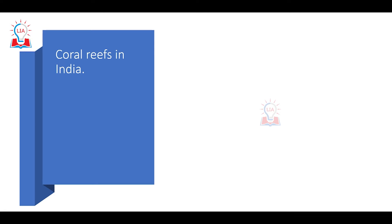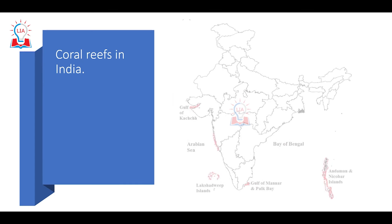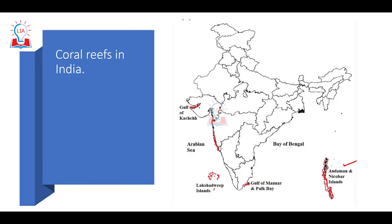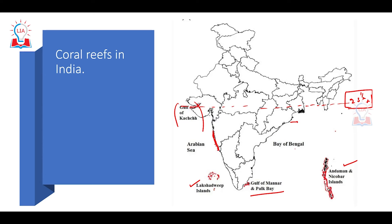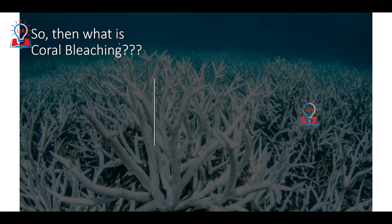In India, coral reefs are found in the Andaman and Nicobar Islands, Lakshadweep Islands, Gulf of Mannar, along the coast of northern Karnataka and Maharashtra, and in the Gulf of Kutch. Because the southern part of India lies in the tropics below the Tropic of Cancer and the Indian coastline experiences warm waters, we find coral reefs in the Indian Ocean.